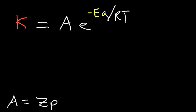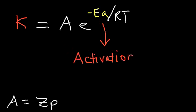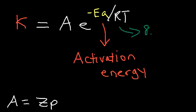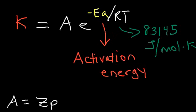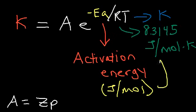Ea is the activation energy — that's how much energy you need to get the reaction started. R is the energy constant and it's equal to 8.3145 with units of joules per mole per Kelvin. Therefore, temperature is measured in Kelvin. You don't want to plug in the Celsius temperature in this equation. The activation energy has units of joules per mole, and it has to match with the units of R.